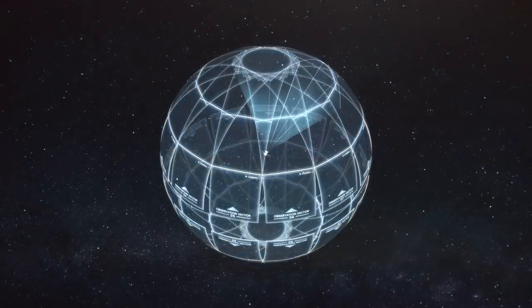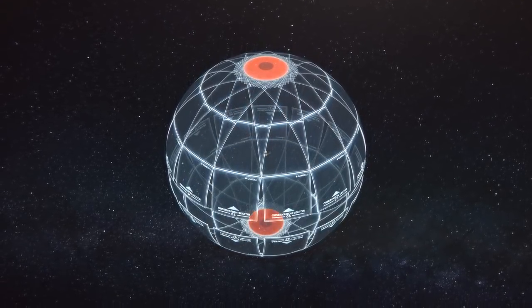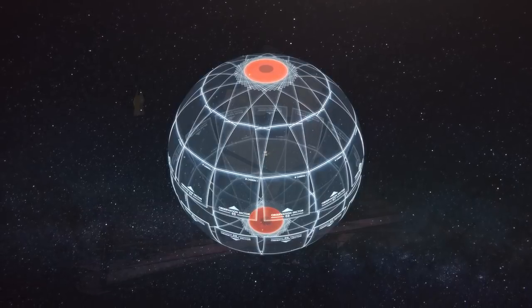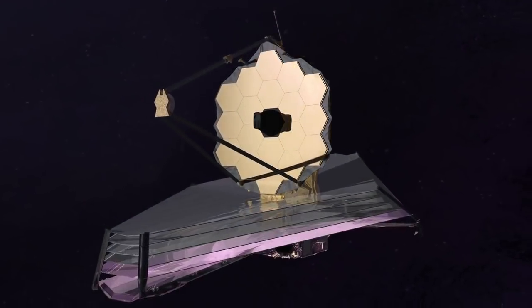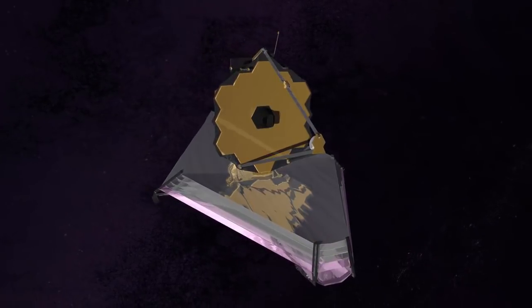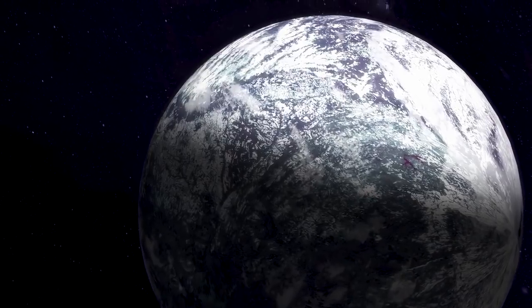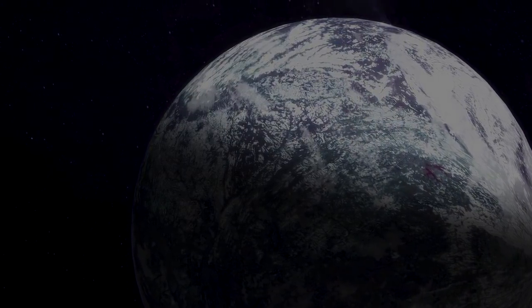Because TESS' observation sectors overlap, it will have an area near the pole under constant observation. This region is easily monitored by the James Webb Space Telescope, which allows the two missions to work together to first find and then carefully study exoplanets, expanding our understanding of worlds beyond our own.